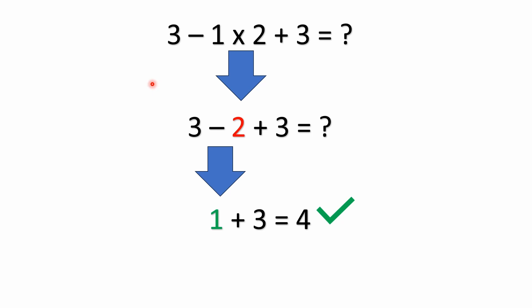So according to the order of operations convention, we would solve parentheses, exponents, and then go on to multiplication, division, addition, and subtraction. In this case, we don't have any parentheses, we don't have any exponents, or even square roots.